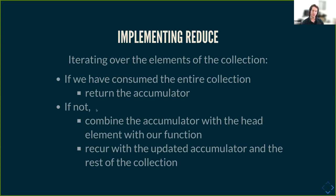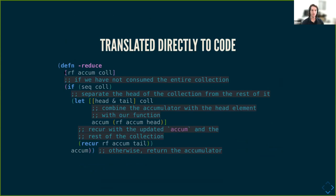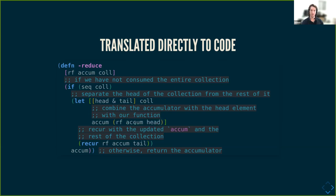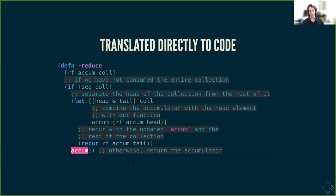This translates directly to code, and I even left in the comments which map directly to the text. If we have not consumed the entire collection, the seq check returns nil if the collection is empty. Assuming it is not empty, we take apart the head and tail of the collection, we use the reducing function to combine the accumulator and the head element, and then we recur with an updated accumulator and the rest. If the collection is empty — seq returns nil — we hit the accumulator and return it.